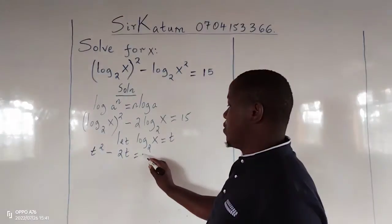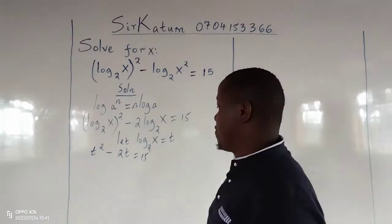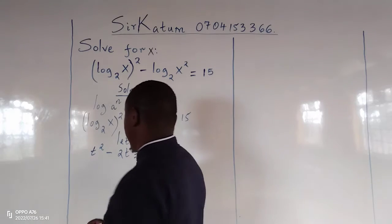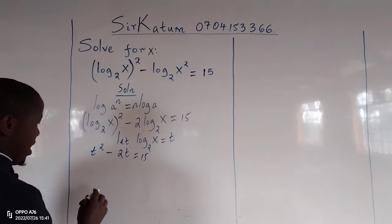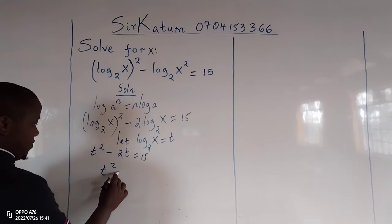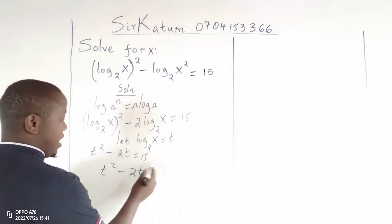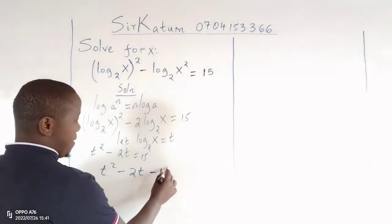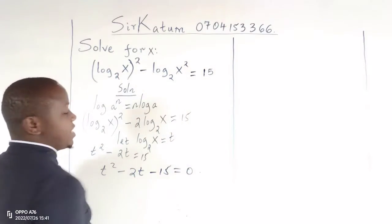Now from here, we can rearrange the equation, so that we arrive at t squared minus 2t, and we bring 15 here making it negative, equals 0.